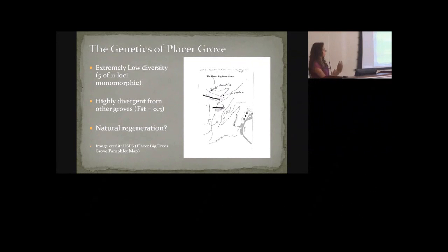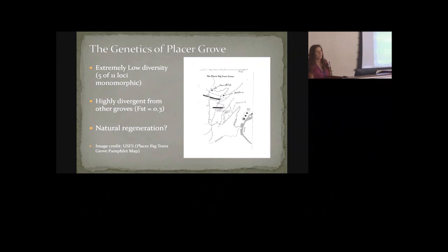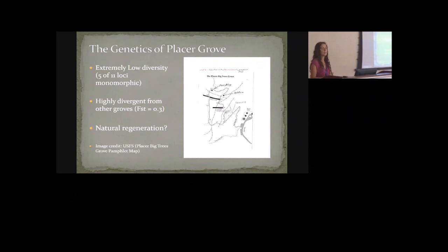The low heterozygosity is another indicator that diversity is low and there is potential inbreeding — not selfing, but in a different sense. Placer Grove is also very divergent from other groves, meaning its genetic composition is very different from any other grove across the range. The FST value of 0.3 is really high across the natural range of a tree species. There are two young individuals in this grove, but genetically they couldn't be the product of those six mature trees, so they have been planted — intentionally or unintentionally. The Forest Service has no record of an intentional planting, though they have done planting there, most of which has been unsuccessful.